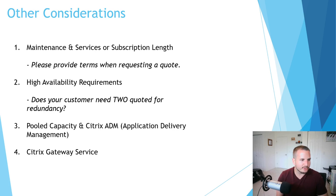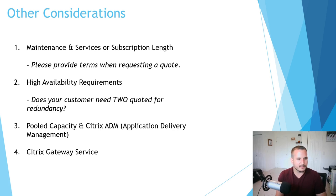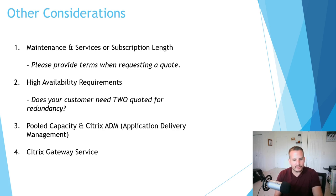Definitely check out pooled capacity if that's a use case for you. You pay for a pool of throughput that you can divide across multiple ADC instances. For example, if you're paying for 20 gigs of pooled capacity, you can allocate one gig to one ADC, five gigs to another, and 200 megs to a third — you literally decide which appliance gets which amount of throughput.